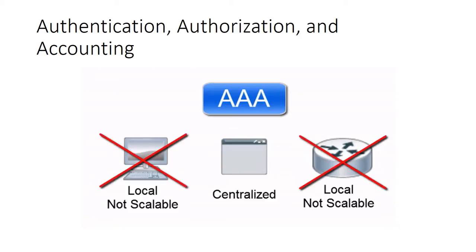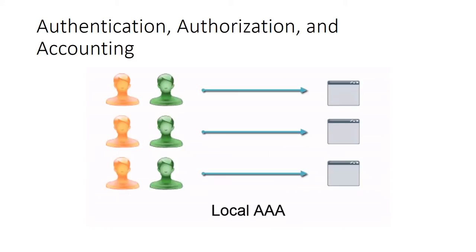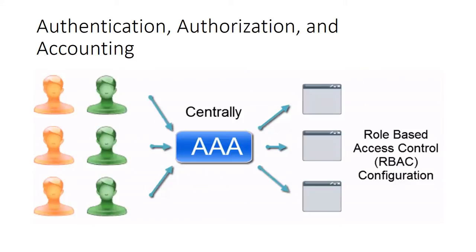AAA can be configured locally on a device such as a router or a switch, or it can be configured as a central application. While simple, the locally configured AAA server is not scalable compared to a centralized AAA server. Imagine a network with hundreds of devices using AAA — an administrator would have to log into each of those hundreds of devices, add the user, and give them an administrator-defined password for every new hire.